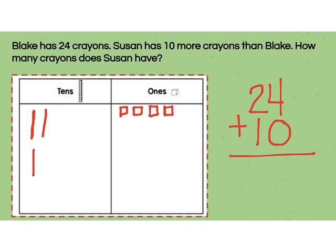So to get my answer I count all my tens. I have 3 tens and 4 ones. So 4 ones, 3 tens. So that means that Susan has 34 crayons.